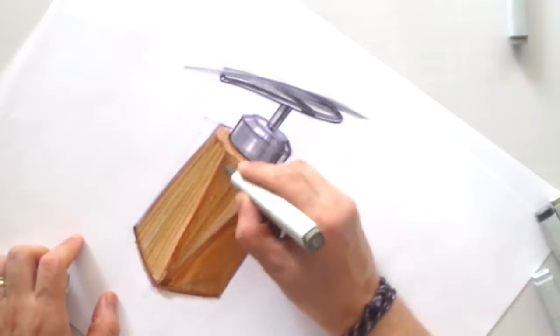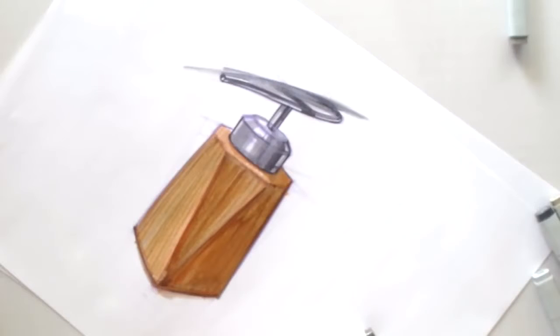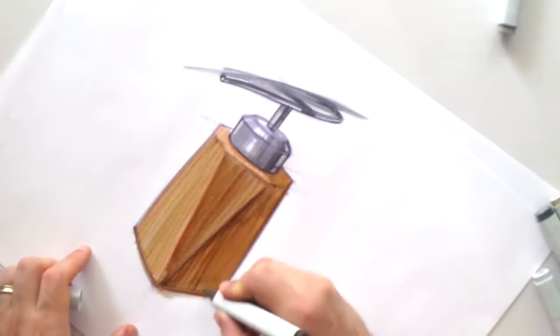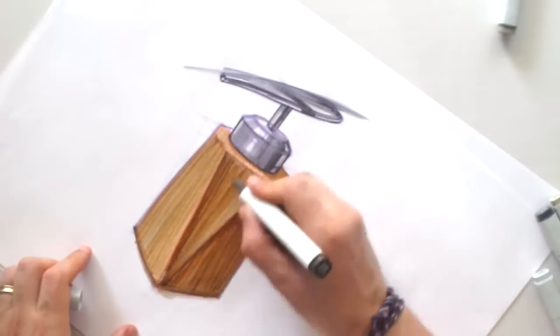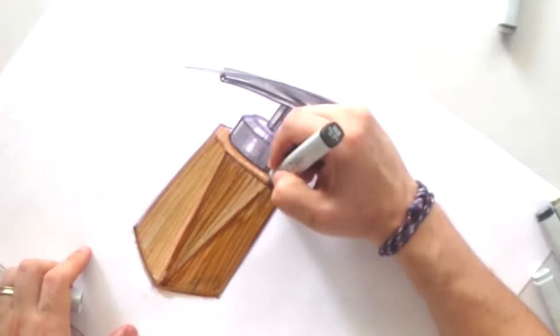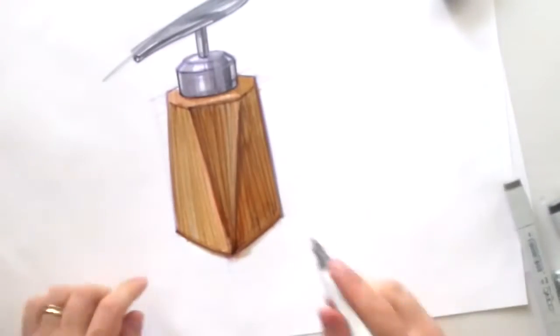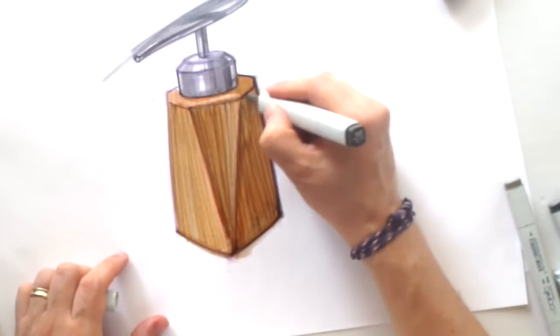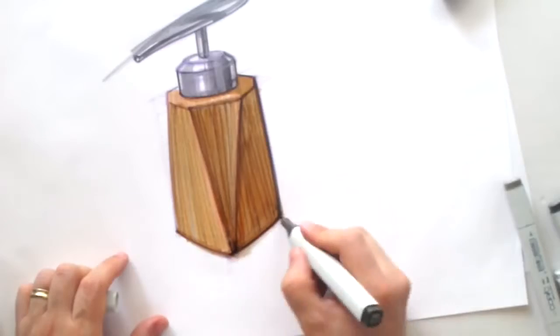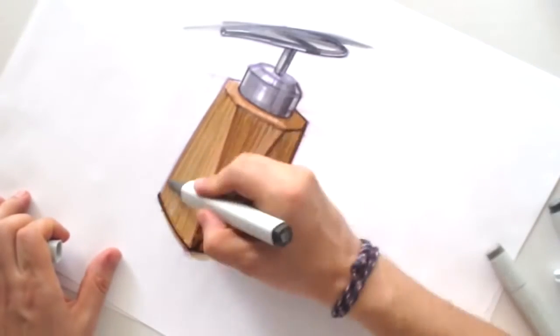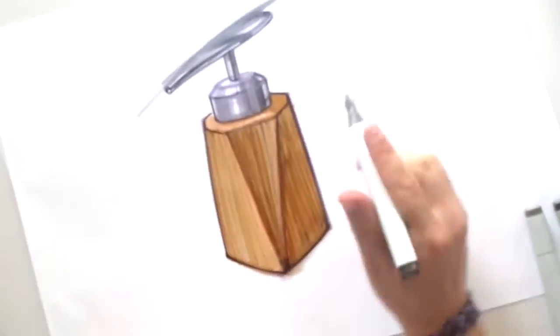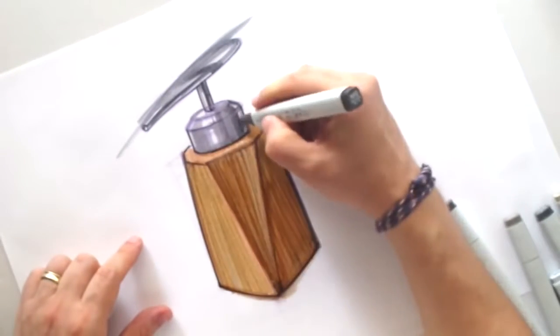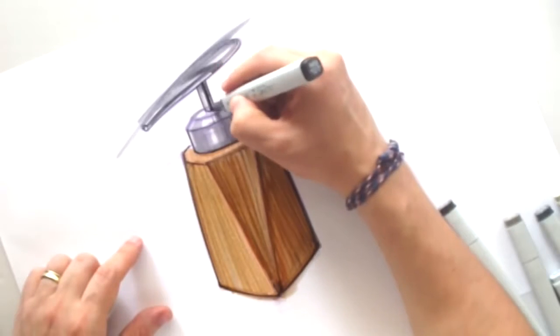With a darker marker I can create the texture of the wood, and at the same time do the contour and the shadows underneath the object. I want my object to pop up from the white page.